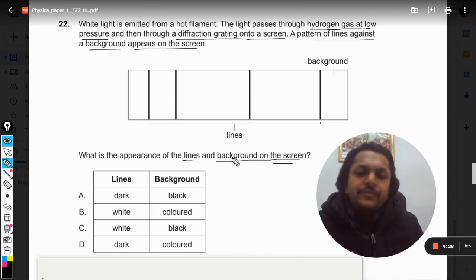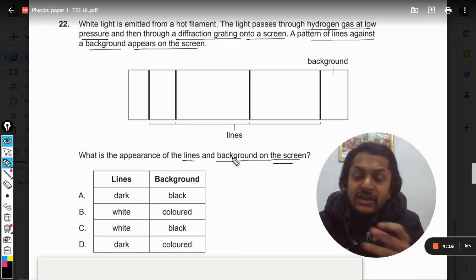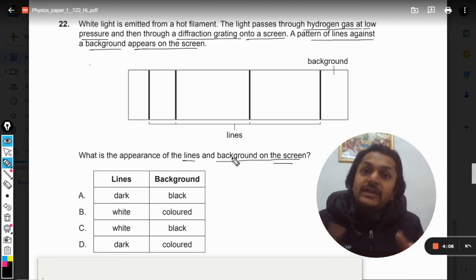What is the appearance of the lines and the backgrounds on the screen? Now this is a very simple question. Whenever the white light is traveling through something, white light consists of all the colors, so there are seven colors: violet, indigo, blue, green, yellow, orange, red.